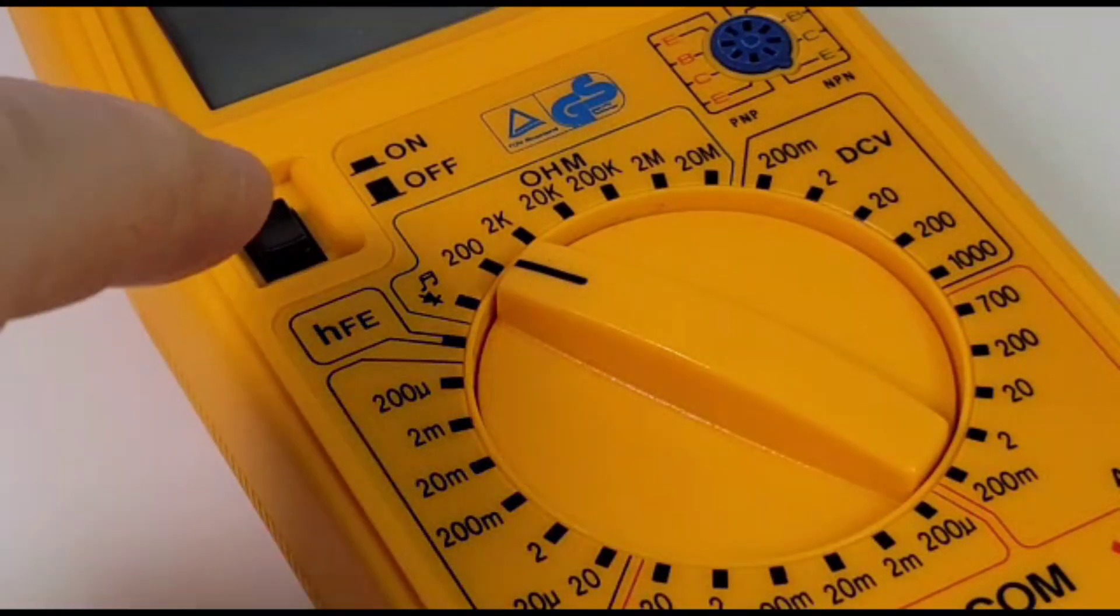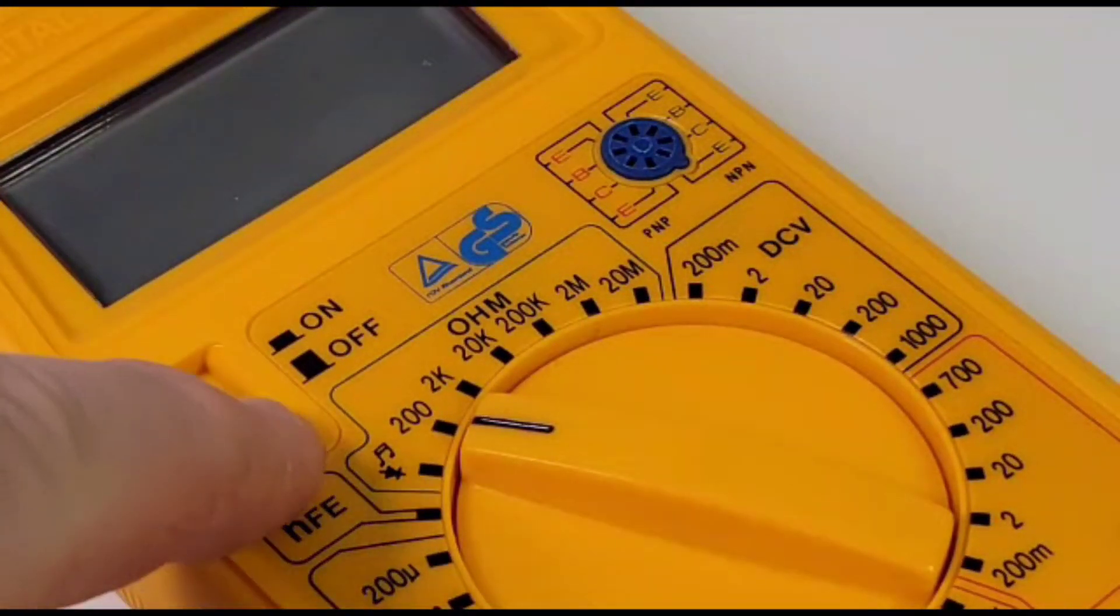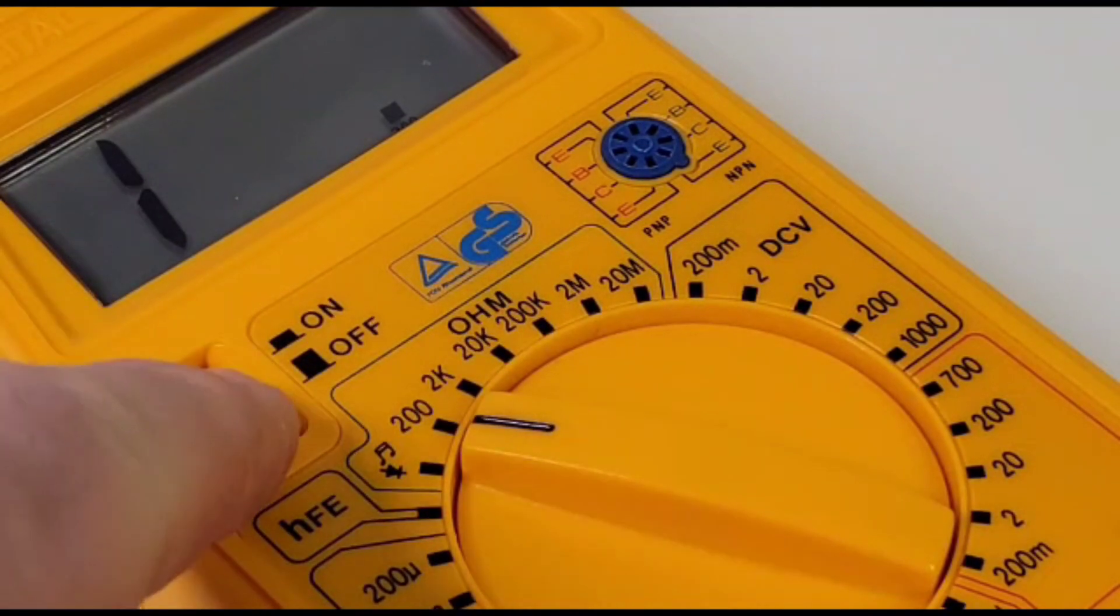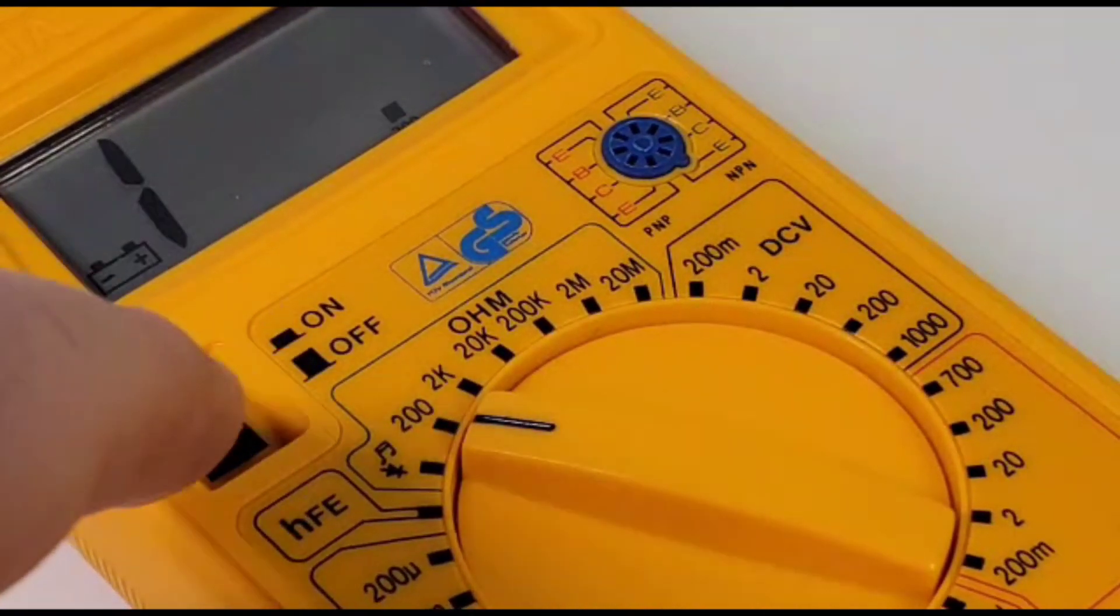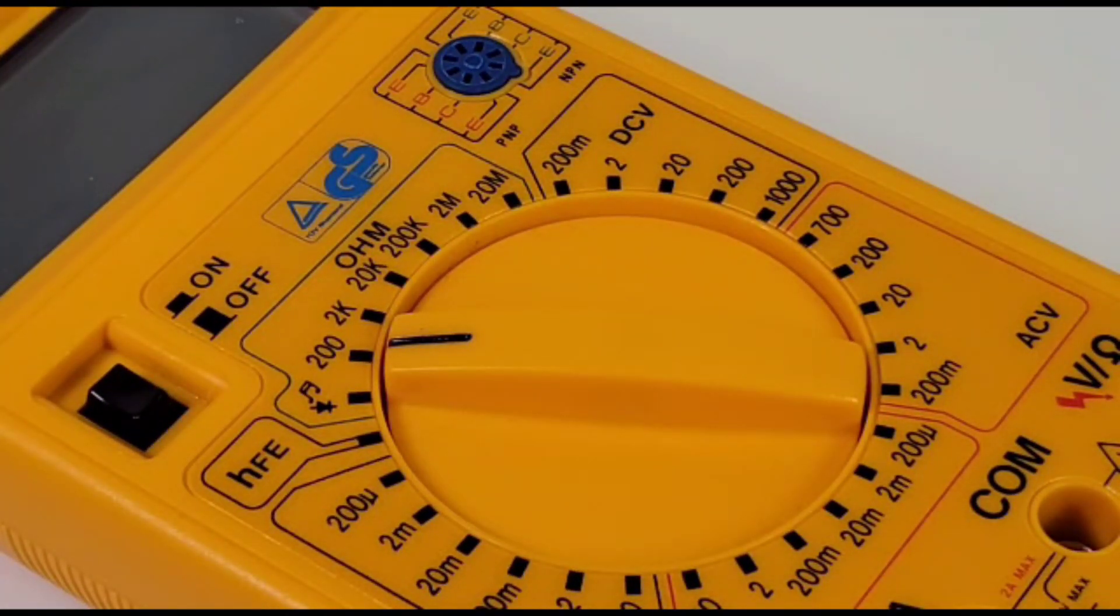The Metex 3800 boasts that one touch on off button. I gotta say, I like it. Now we can see that low battery indicator coming on sometimes. That's because the nine volt in there is probably not the freshest, but yeah, I like the on off.